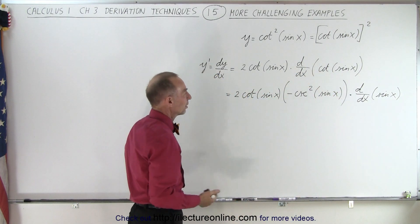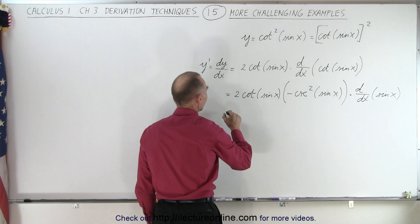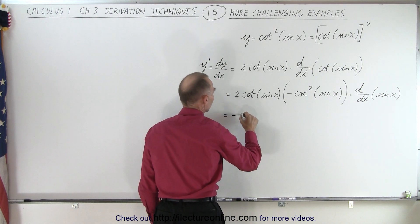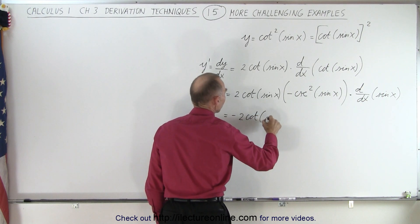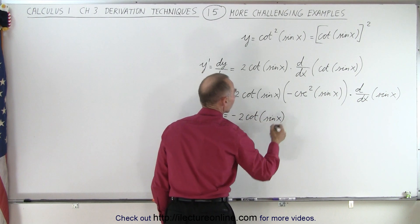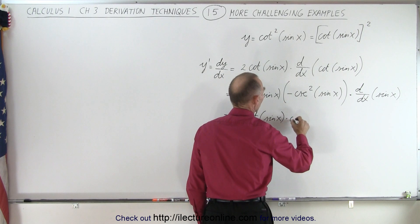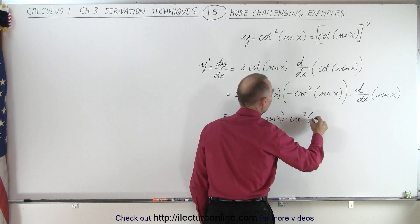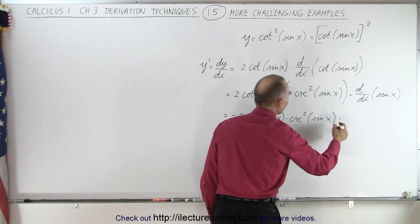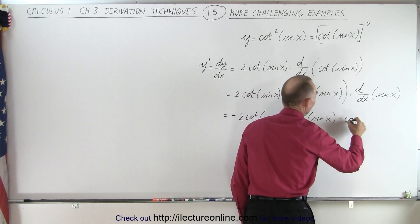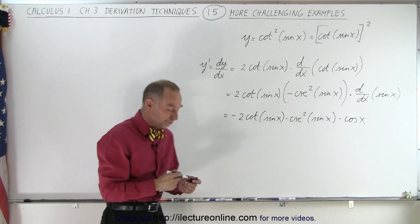We'll put the negative in the front. So this becomes equal to minus two times the cotangent of the sine of x, times the cosecant squared of the sine of x, times the cosine of x. And that is ultimately the derivative.